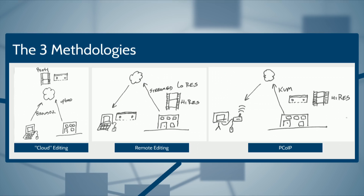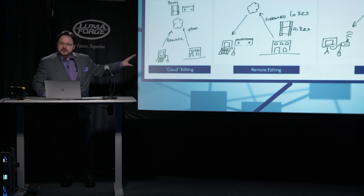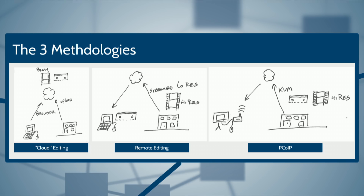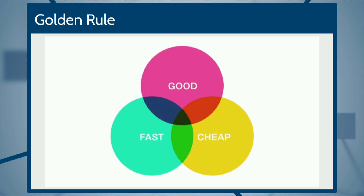There are three different paradigms of remote editing. Each of my drawings includes the golden rule so you know what's good, fast, and what's cheap, to help demystify things. The first is cloud editing — actually editing in a browser, where proxies sit in your cloud or data center outside the four walls of your facility. The second has high-res at your home base, with a proxy streaming through the cloud to your edit system at home. The third is something called PC over IP, which I love because acronyms make me sound smarter.